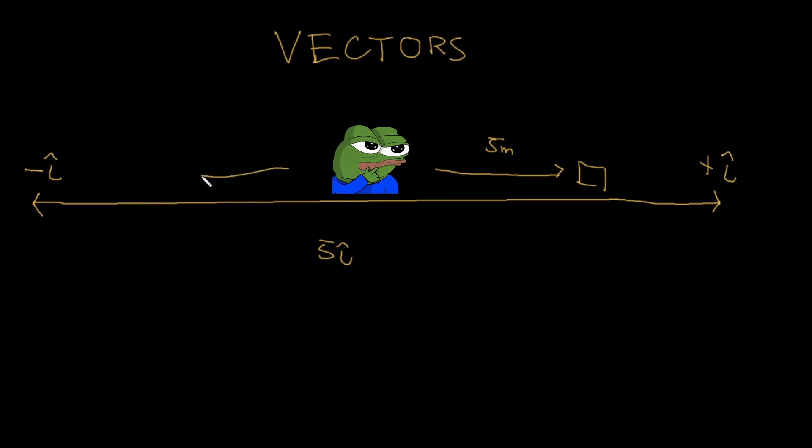Or the box could be behind me. Again, five meters. Now, we can write this as five negative i hat, or negative five i hat. Meaning, I traveled five meters, yes, but in the negative i hat direction.